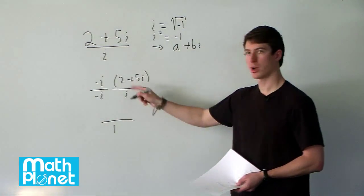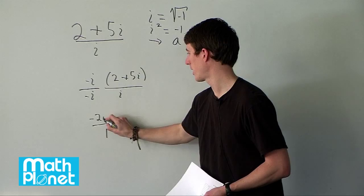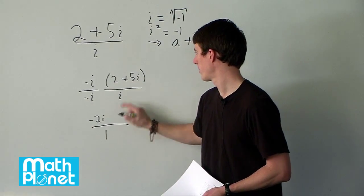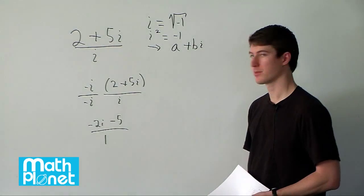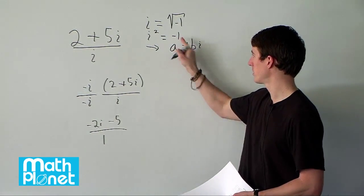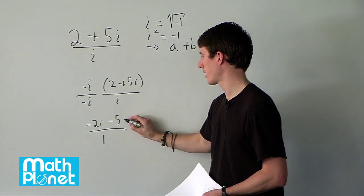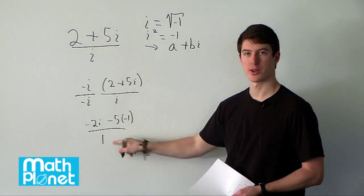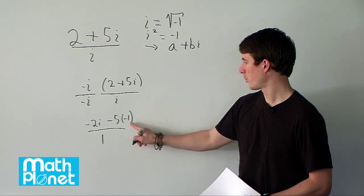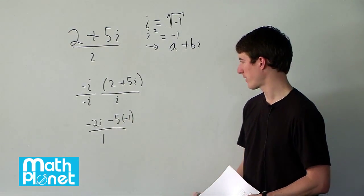And then in the numerator we have negative 2i and then we have minus 5 times i squared. i squared is negative 1 so we have a negative 1 here. So we can finally simplify one more step. We don't need to worry about the denominator anymore, it's just 1.